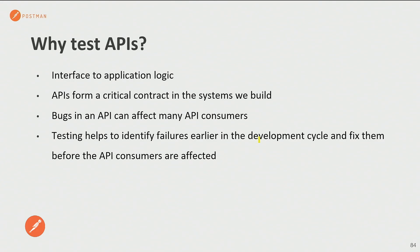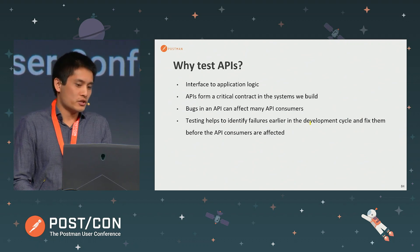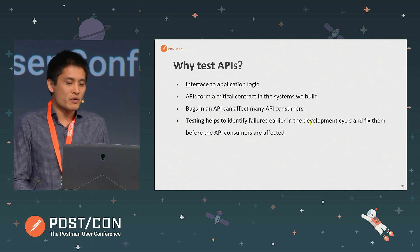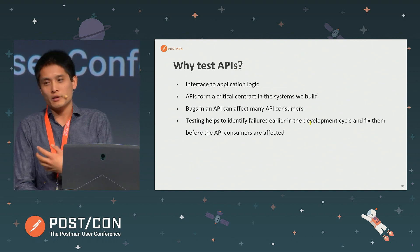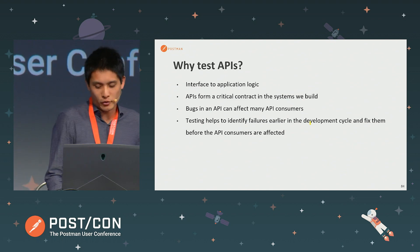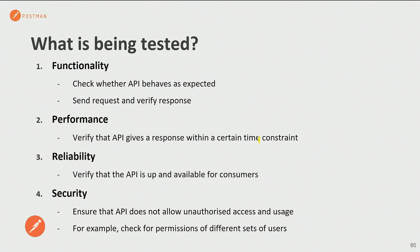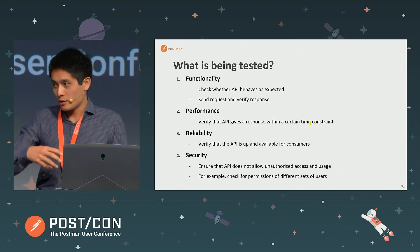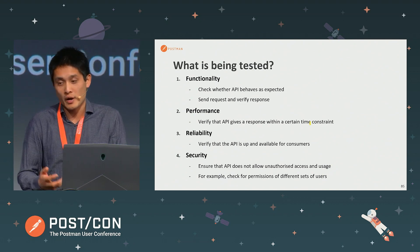Why do we test APIs? Testing is always important in any form of software development, especially for APIs because the APIs are the interface to our application logic. They form a critical contract in the systems we build. If there is a bug in our API, it can affect many API consumers and many different applications. We want to obviously test our APIs to identify potential problems earlier in our development cycle and fix them before we affect everyone else. For functionality, we check that the API behaves as we expect — we send a request and verify we get the correct response, including checking that the data is correctly formatted.